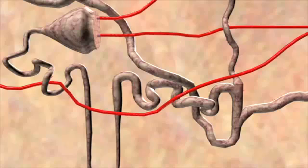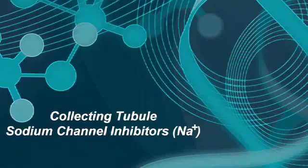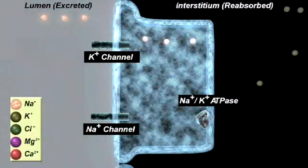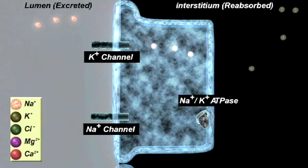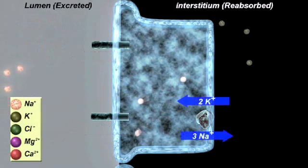The last site for diuretic action is the connecting and collecting tubules. This is where the sodium channel inhibitors act. Again, the transporters present in the collecting tubule are slightly different than at the other sites of the nephron. At this site,